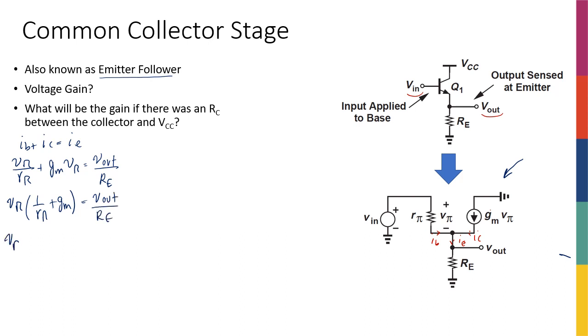So Vπ, and then this is going to be 1 plus gm Rπ over Rπ, and then I'm going to bring Re to this side which is going to be equal to Vout. So Vπ is going to be, gm Rπ is β, so this is going to be β+1 over Rπ times Re.